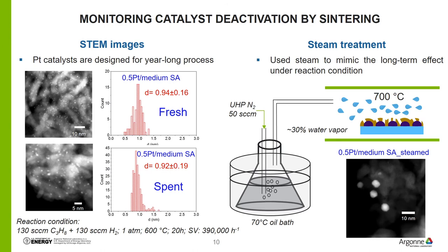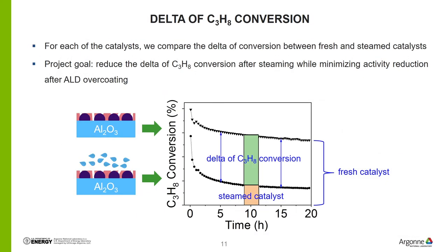The lower red figure shows larger Pt nanoparticles formed after steaming. To evaluate the performance for each catalyst, we divided each catalyst into two equal amounts — one tested without steaming, one tested after steaming. Since the Pt nanoparticles sinter after steam treatment, the propane conversion curve for the catalyst after steaming will be below the one without steaming. Propane conversion means the percentage of propane converted in the reaction, which is directly related to the longevity of the catalyst. So this project's goal is to reduce the delta of propane conversion after steaming, while minimizing activity reduction after ALD overcoating.